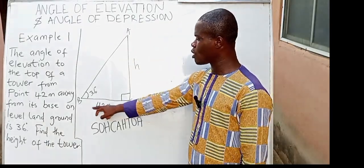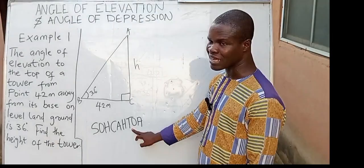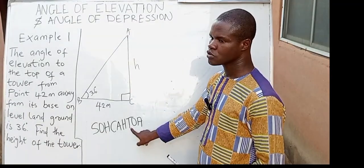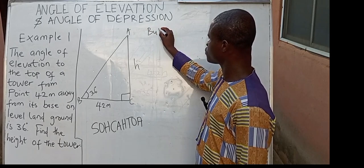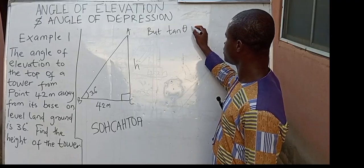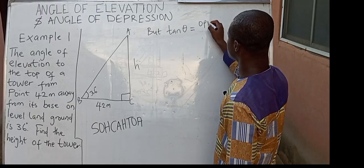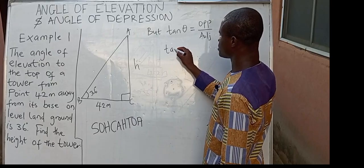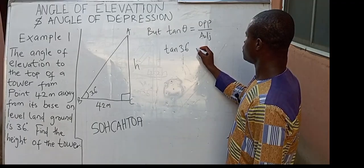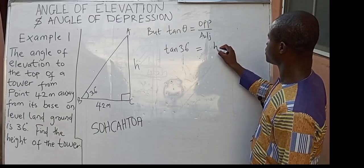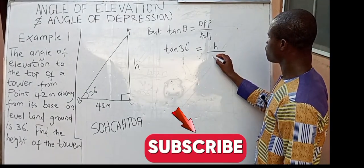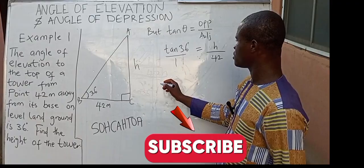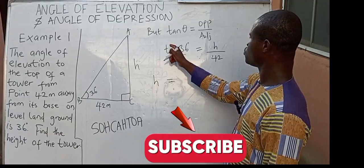This is the given angle, so the line facing it is our opposite, and the other line is our adjacent. We are going to use the tangent of an angle because we are dealing with opposite and adjacent. So we can say: tan theta equals opposite over adjacent. Theta is our given angle, 36 degrees. So tan 36° equals H divided by 42. Cross multiplying: H times 1 equals 42 times tan 36°.